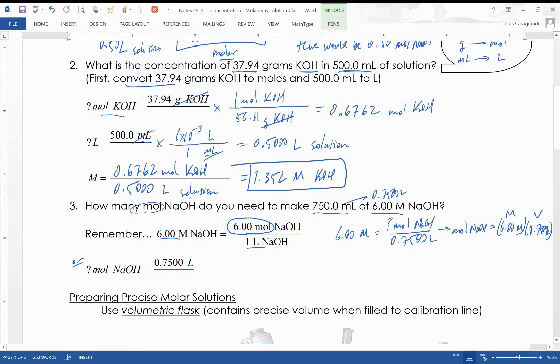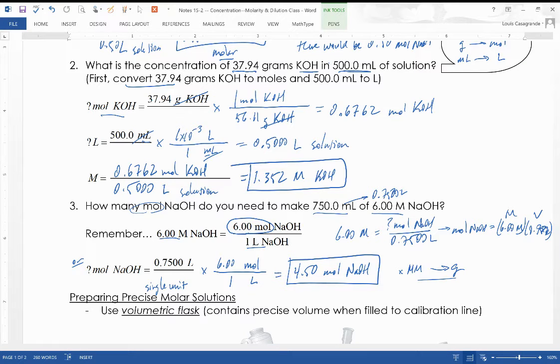Or we can use it as a conversion factor. Whichever way is easiest for you at this point, although I would practice this way because when we get to stoichiometry we're going to need to do this. So we take the 0.750 liters, start with your single unit, and we're going to multiply by, well there's 6.00 moles in one liter. We're going to get the same answer either way. It's going to be 4.50 moles of sodium hydroxide. Now in the homework I'm going to ask you further to convert that from moles into grams. So you'd multiply by the molar mass to get to grams. We're not going to do that here because I want to move ahead and show you how to prepare these precise solutions.